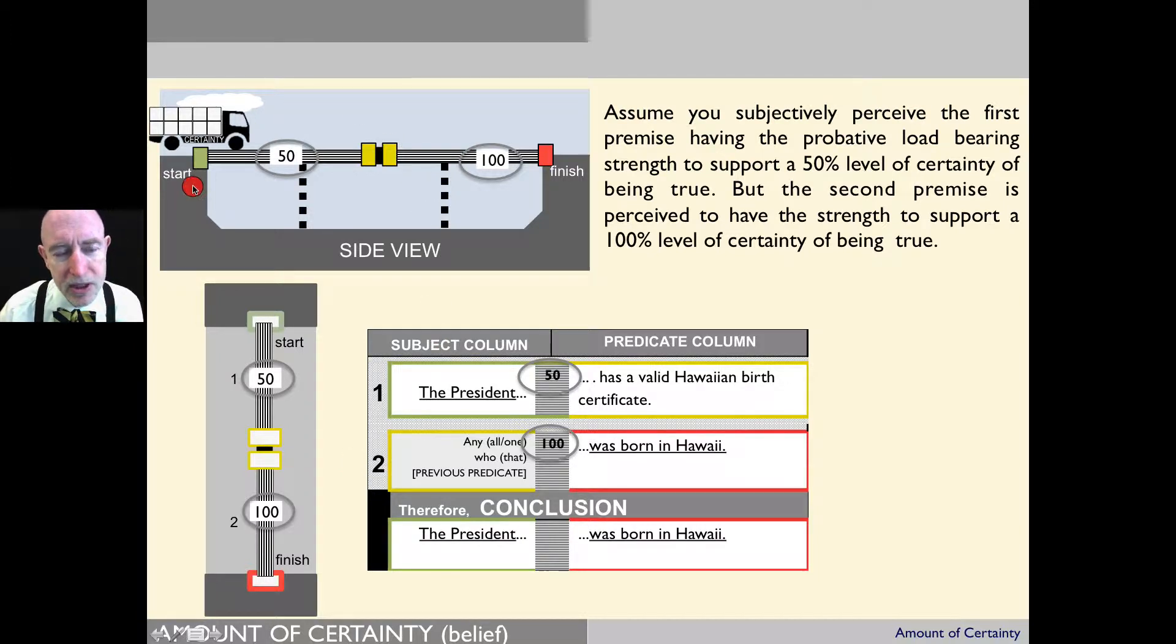So you can see that, like in a real bridge, the components of the bridge can have different amounts of strength, and that makes a big difference when the audience is traveling across your logic bridge. The question becomes: how much certainty can they arrive with at the finish?